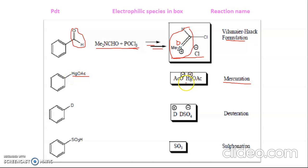In mercuration, an OAc group is attached to the benzene ring using Hg(OAc)2 — this is the negative part and this is the positive part. For deuteration, we use D2SO4, the deuterated version of sulfuric acid. Just as H2SO4 ionizes to H+ and HSO4-, here we get D+ as the electrophile and DSO4- as the negative part. For sulfonation, the electrophile is SO3.